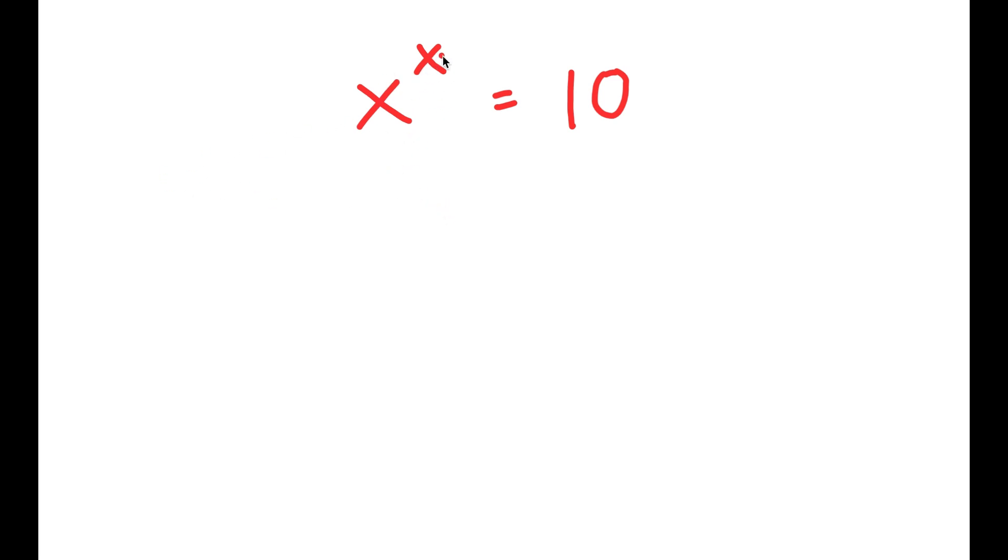So our first step here is to actually take the natural log or ln on both sides. So I get ln x to the power of x is equal to ln 10.